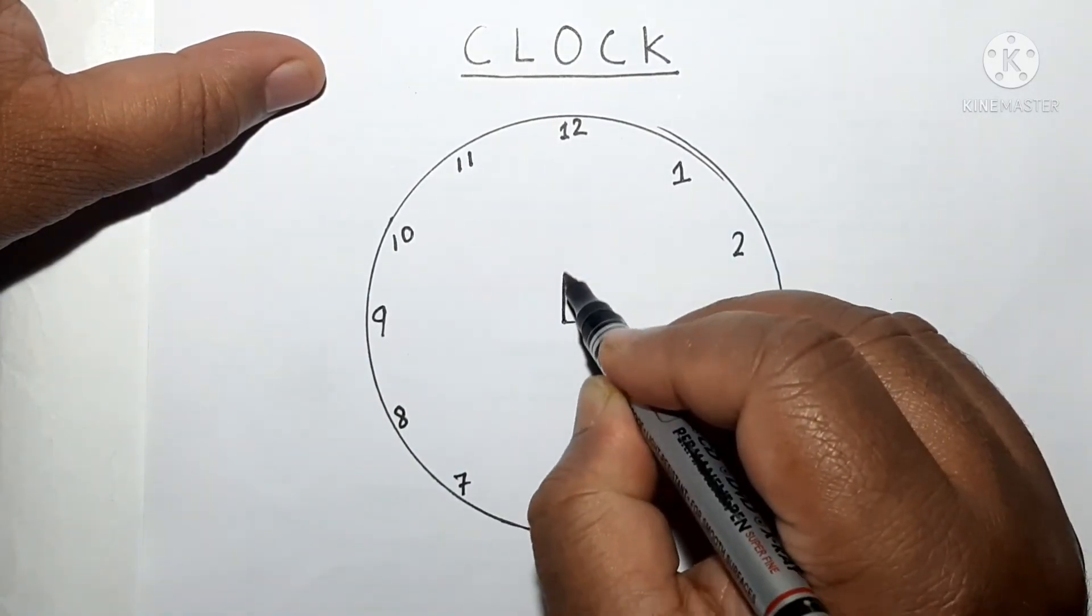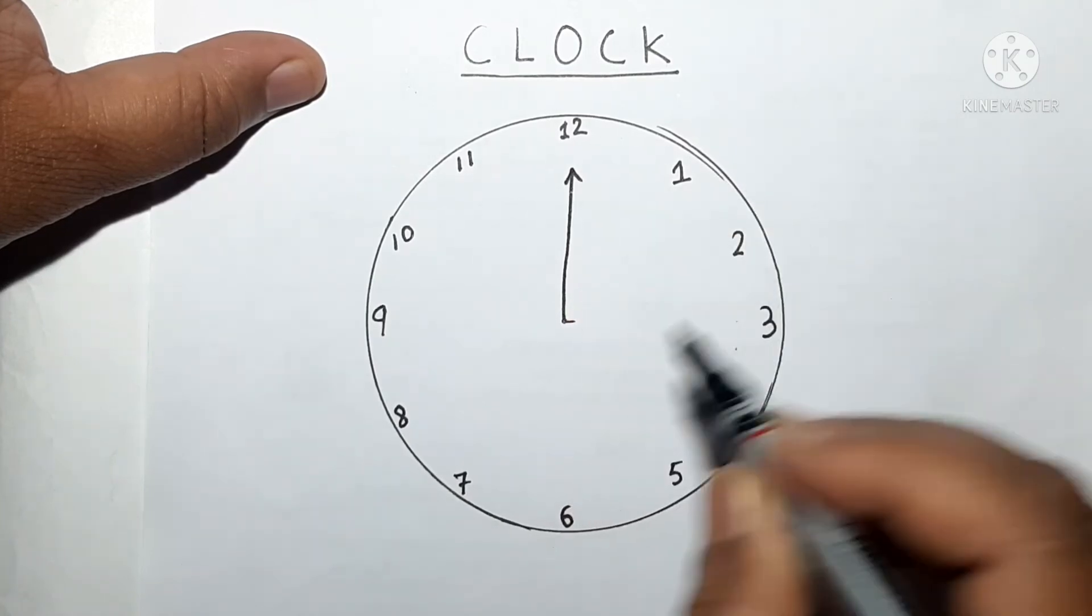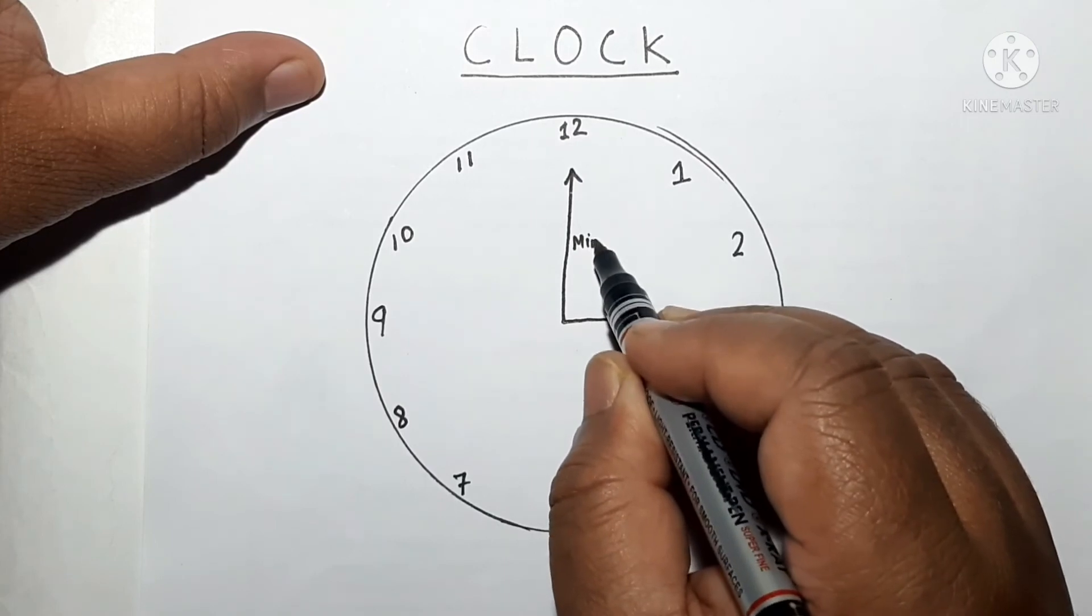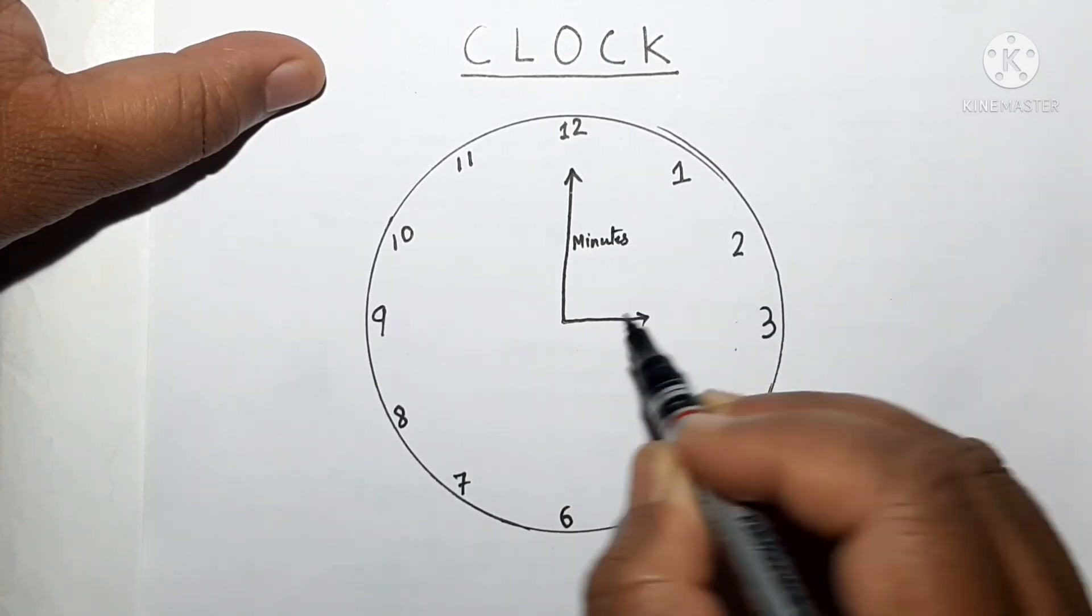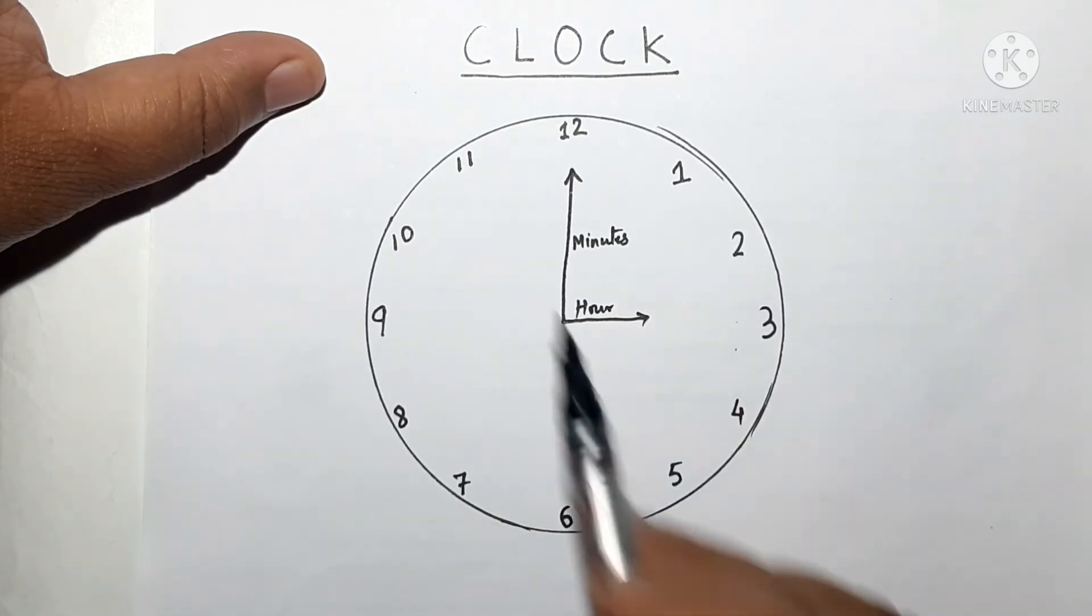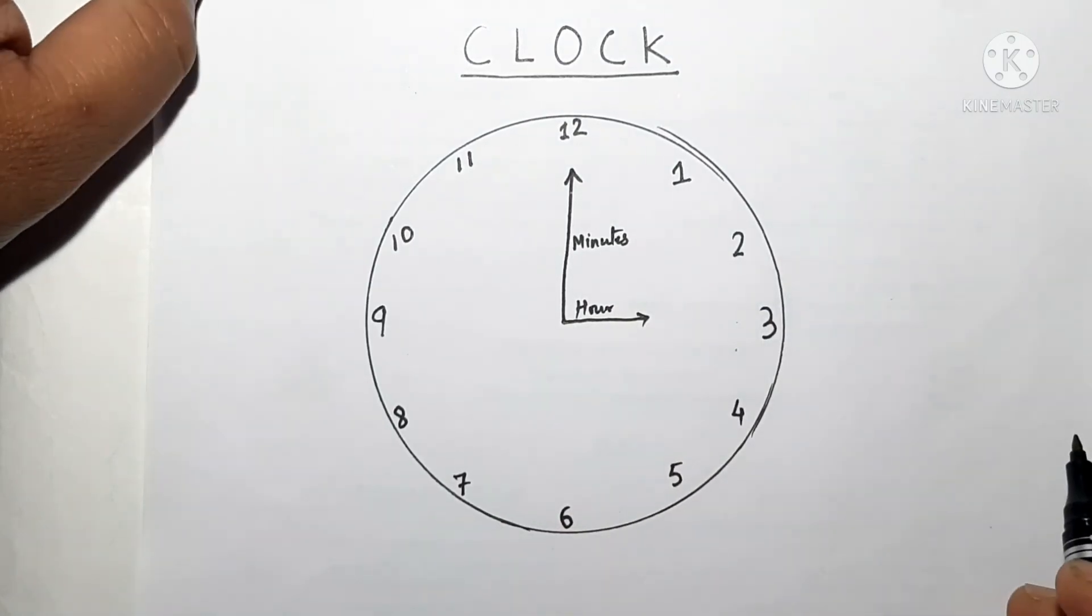Now I can give you one minute hand and then hour hand. So the longer hand is called the minutes and the shorter hand is called hours. So children, in this way you can draw a clock.